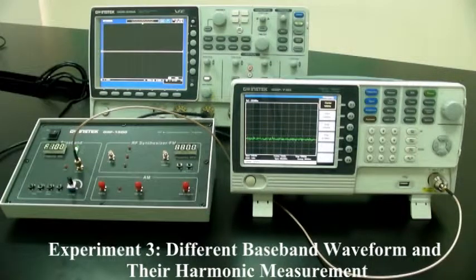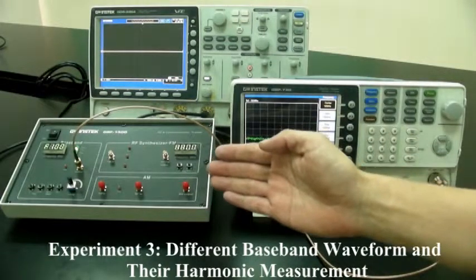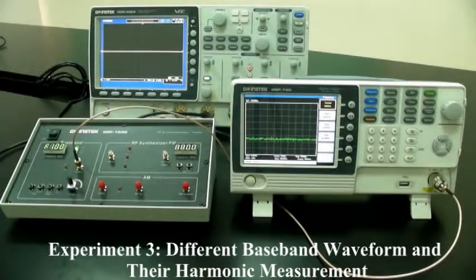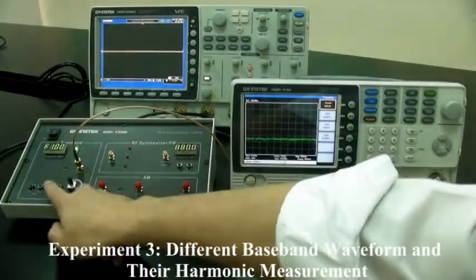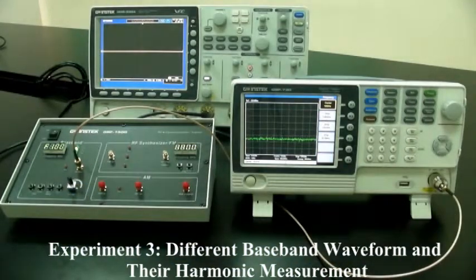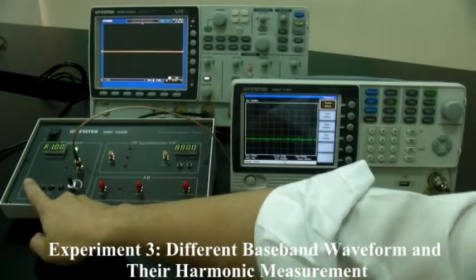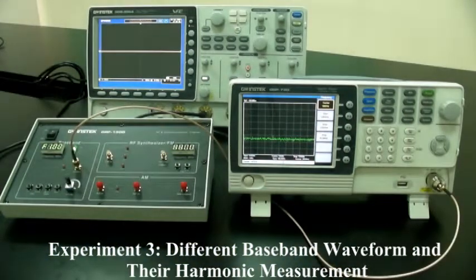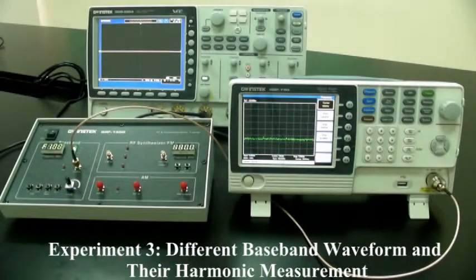Turn on the GRF-1300 and the GSP-730. Set the GRF-1300 baseband as follows: Wave on triangle angle. Frequency: 1 MHz. Turn the input amplitude knob clockwise to the end.